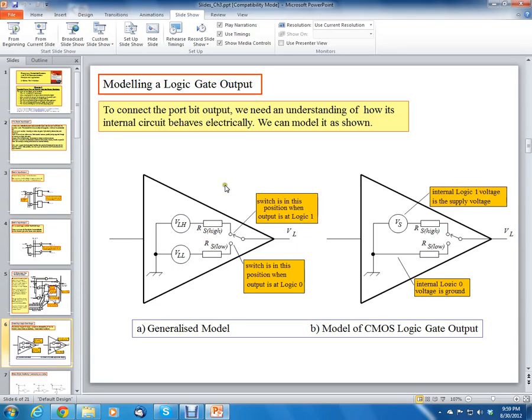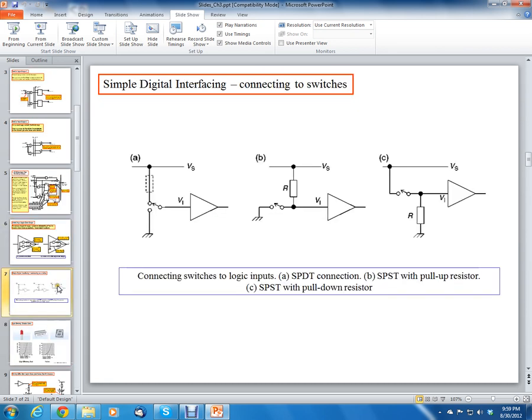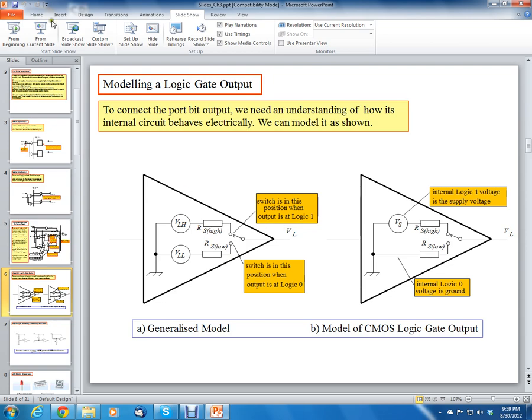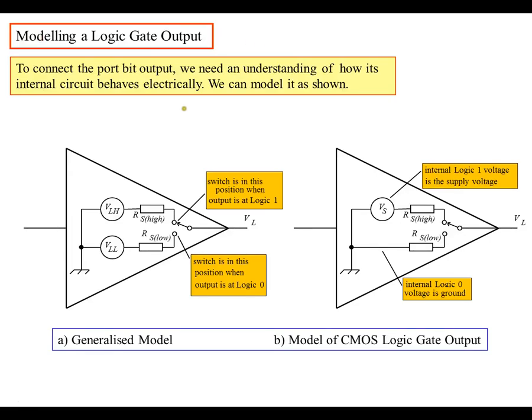Hello, this is Clint Holstead and this is a continuation of Introduction to Microprocessors. We're talking about chapter 3, which is about parallel ports, clocks, and power supplies. We're going to finish out section 3.2.2 through section 3.3, so we'll be talking about logic and switches and LEDs.